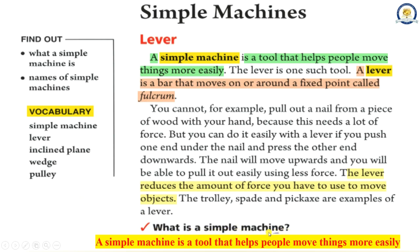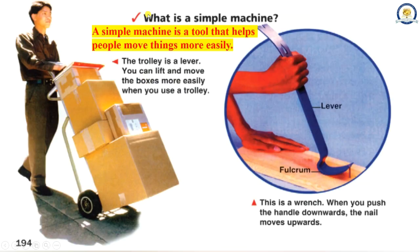But you can do it easily with a lever if you push one end under the nail and press the other end downwards. The nail will move upwards and you will be able to pull it out easily using less force. The lever reduces the amount of force you have to use to move objects. The trolley is a lever. You can lift and move the boxes more easily when you use a trolley.